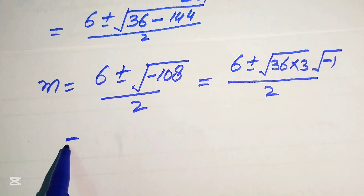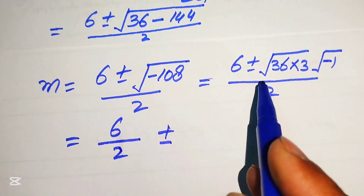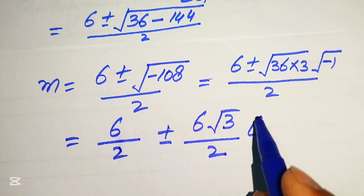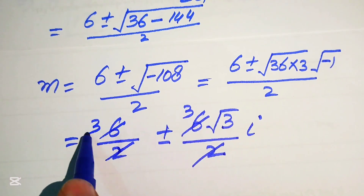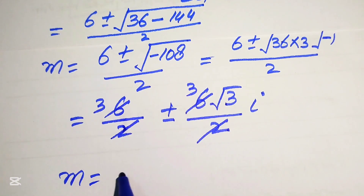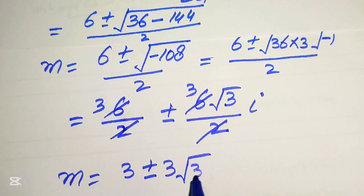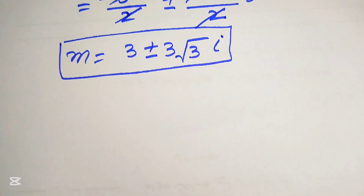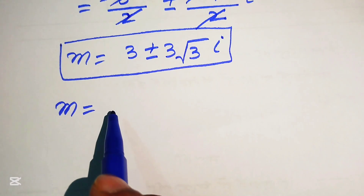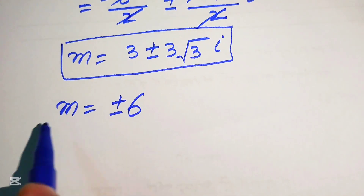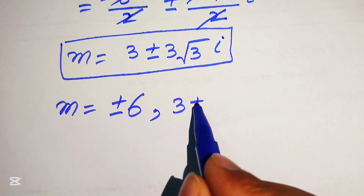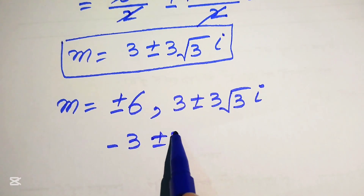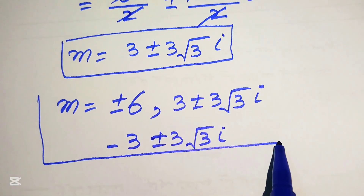Breaking the fraction: 6 over 2, plus or minus square root of 36 is 6 times square root of 3, divided by 2, times iota. Cancelling gives m equals 3 plus or minus 3 times square root of 3 iota. Since the original equation is of degree 6, all six roots are: the two real roots m equals plus or minus 6, and four complex roots: minus 3 plus or minus 3 root 3 iota, and 3 plus or minus 3 root 3 iota.